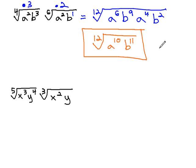Let's take a look at one more example. Let's look at the fifth root of x cubed y to the fourth, times the third root of x squared y. Looking at these indexes of 5 and 3, we see the common index between both of those will be 15, which means the index of 5 needs to be multiplied by 3, and the index of 3 needs to be multiplied by 5.